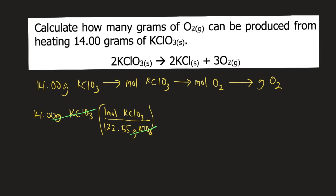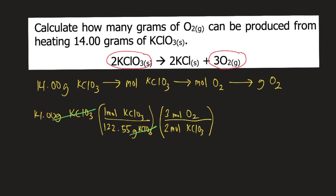Next, convert moles of potassium chlorate into moles of oxygen gas. Look at the balanced equation: according to it, 2 moles of potassium chlorate produces 3 moles of oxygen gas. Plug that into the equation — 2 moles of potassium chlorate produces 3 moles of oxygen gas — so moles of potassium chlorate cancel, and you now have moles of oxygen gas.